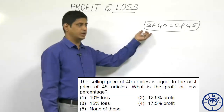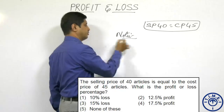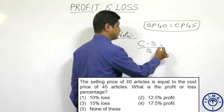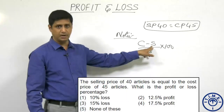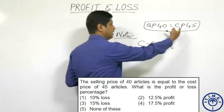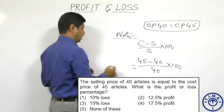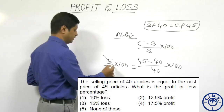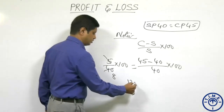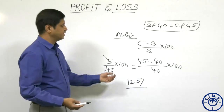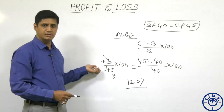One more method: when the cost price of a number of articles equals the selling price of another number, use the formula (C − S)/S × 100. C represents the cost of number of articles and S represents the selling of number of articles. C is 45 and S is 40, so (45 − 40)/40 × 100 = 5/40 × 100 = 12.5 percent profit. A positive number results in profit; a negative number means loss.